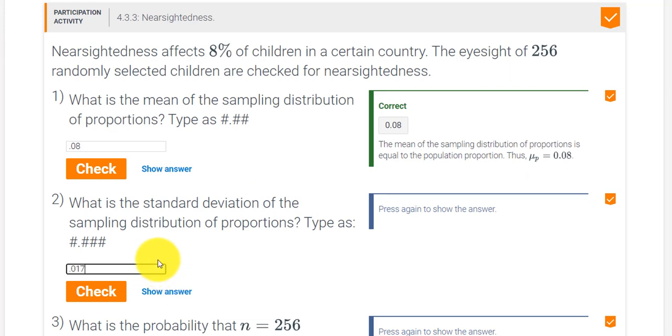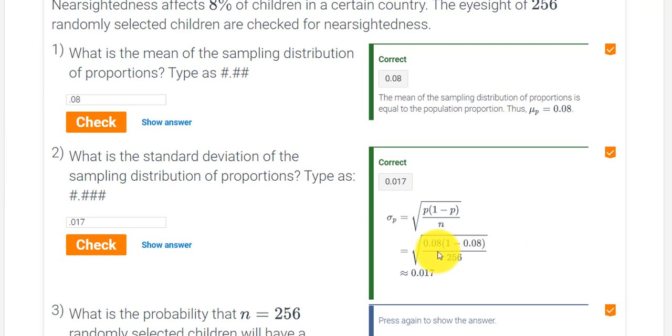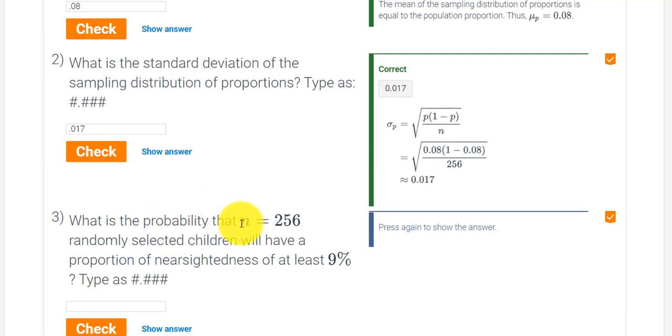0.017, let's check our answer. All right, so we're looking good. We have the standard deviation. So now it says, what is the probability that n equals 256 will have a proportion of nearsightedness of at least 9%, of at least 9%, okay.